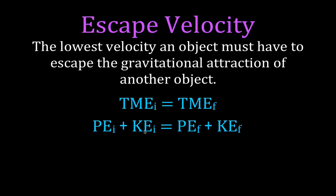That's the lowest initial velocity. Now, the object must have this to escape the gravitational attraction. How do we know it's escaped the gravitational attraction? It has escaped the gravitational attraction of another object when the potential energy is zero. So when that term is zero, it has escaped the gravitational attraction. How do we get it to escape? We gave it some initial kinetic energy. That kinetic energy was used to overcome the gravitational attraction. So when there's no gravitational attraction, all the kinetic energy has been used, and that means the final kinetic energy is also zero.